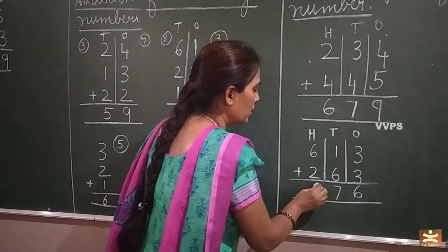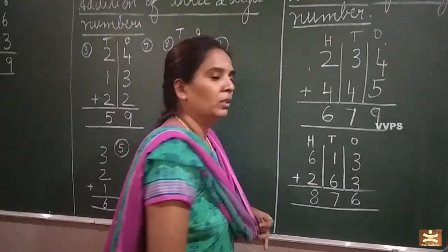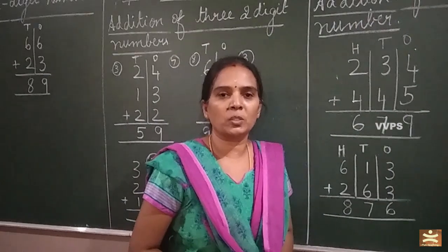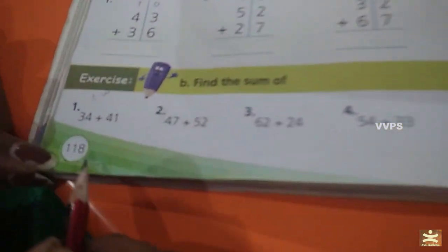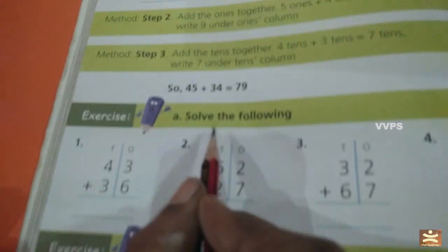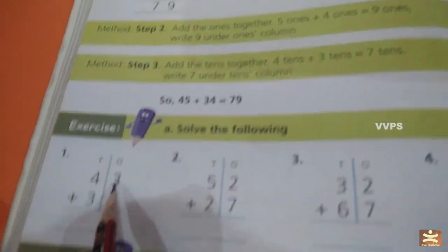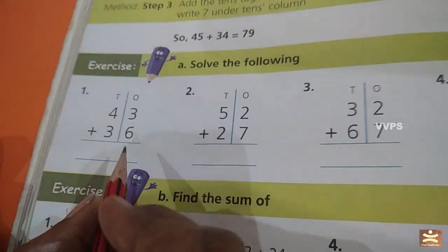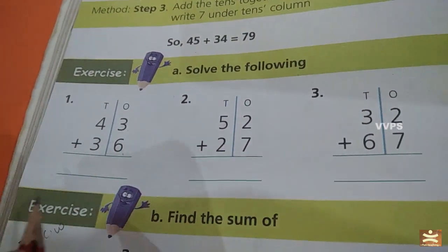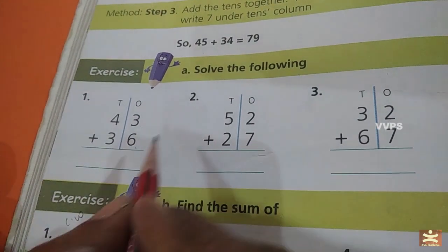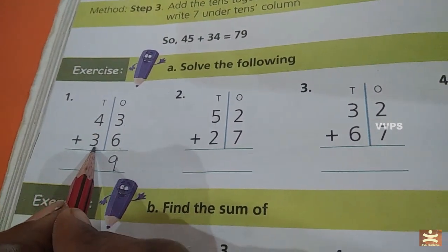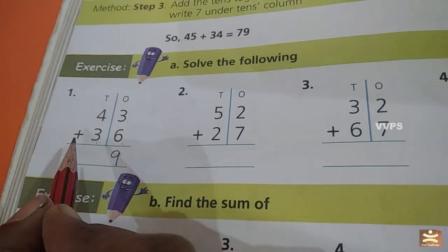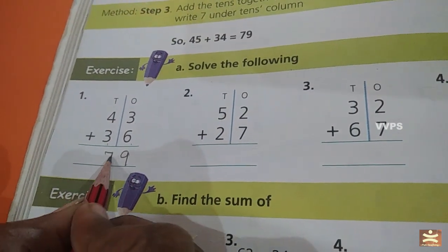Now understood children. Now I will show you how to write in the textbook children. See page number 118. A — solve the following. I taught you now on the board. See: three in the mind, six on the fingers. After three: four, five, six, seven, eight, nine. Write your nine. So four in the mind, three on the fingers. After four: five, six, seven. Write your seven — should be straight children.